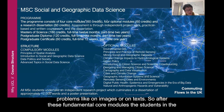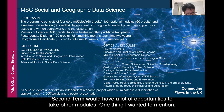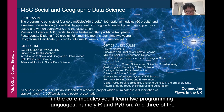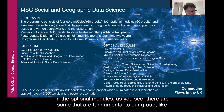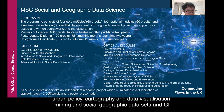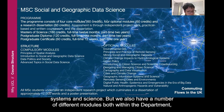After these core modules, students in the second term have many opportunities to take other modules. One thing to mention: in the core modules, you'll learn two programming languages, namely R and Python, and three of the modules will be practicing these programming languages for use in the optional modules. In the optional modules, there are some fundamental to our group, like urban policy, cartography and data visualization, mining and social geographic data sets, and GI systems and science.